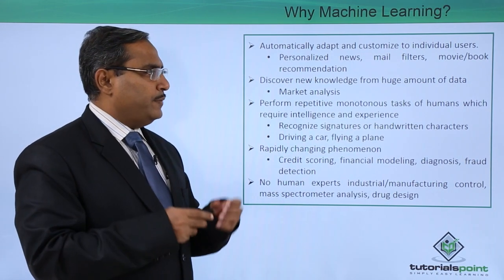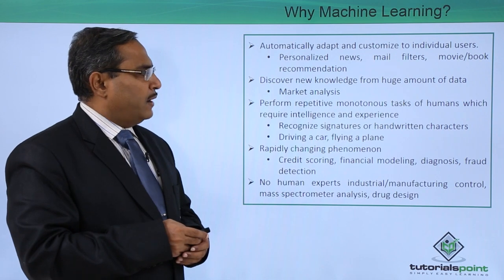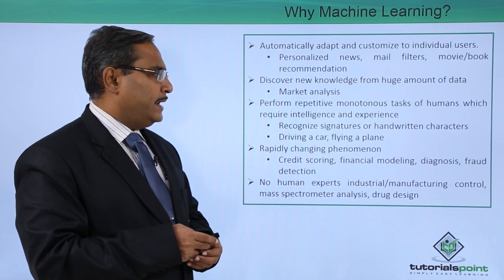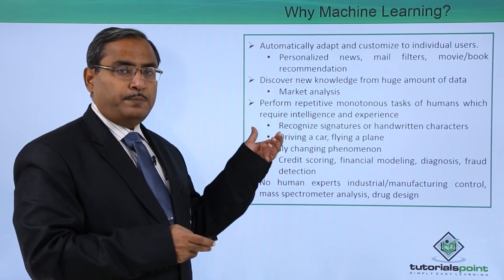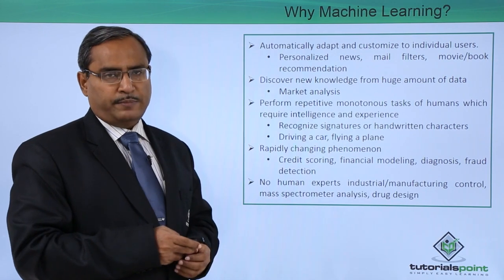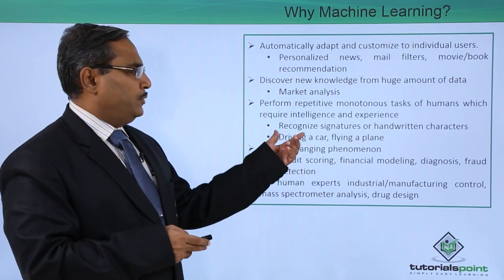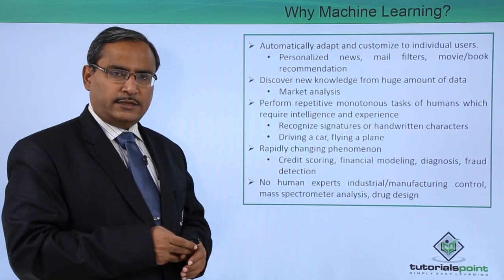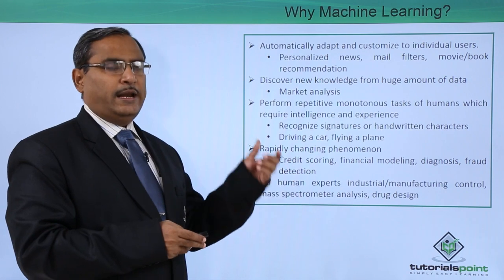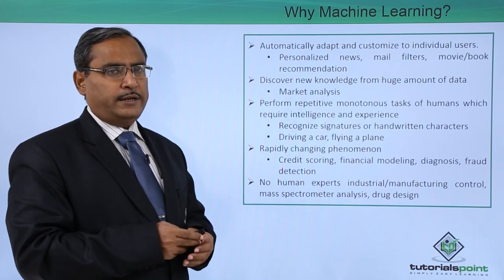Machine learning can discover new knowledge from huge amounts of data — for example, market analysis and trending. It can also perform repetitive, monotonous tasks of humans which require intelligence and experience. In those cases, human beings may be replaced by machine learning applications. For instance, recognizing signatures or handwritten characters requires intelligence and experience, and that work can be done by machine learning applications.